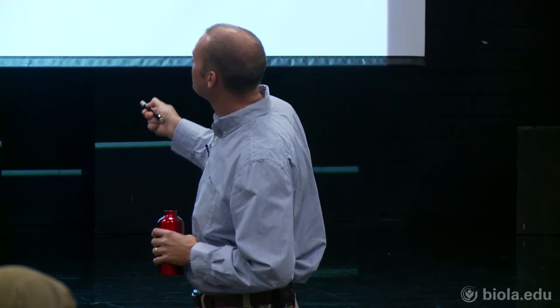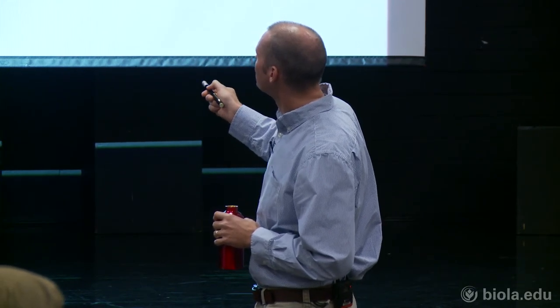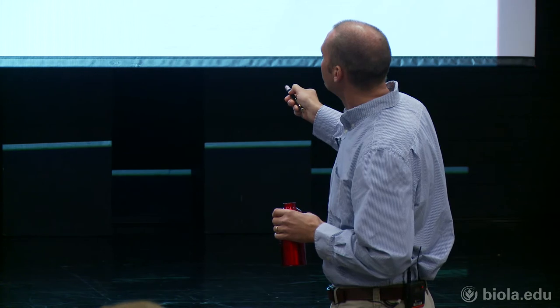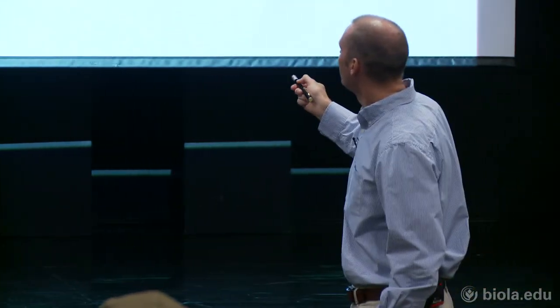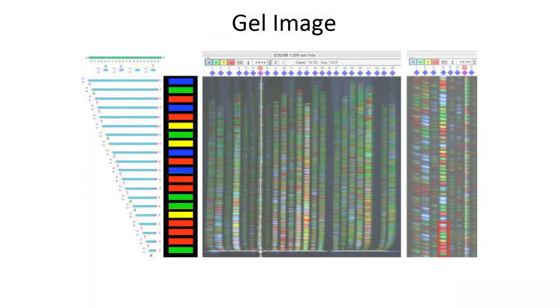An automated sequencer has a sequencing gel — a very thin gel poured between two glass plates, set vertically. Samples are loaded at the top and run down. The sequencer has a laser that keeps scanning back and forth across the bottom, and every time a DNA fragment passes through, if the scanner detects it fluorescing, it records what color it saw at that particular time.